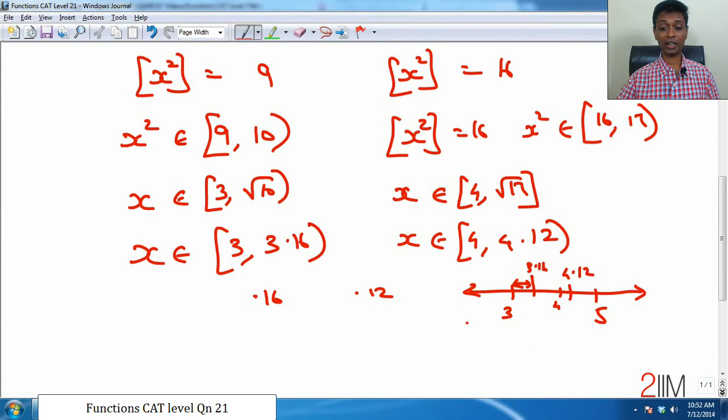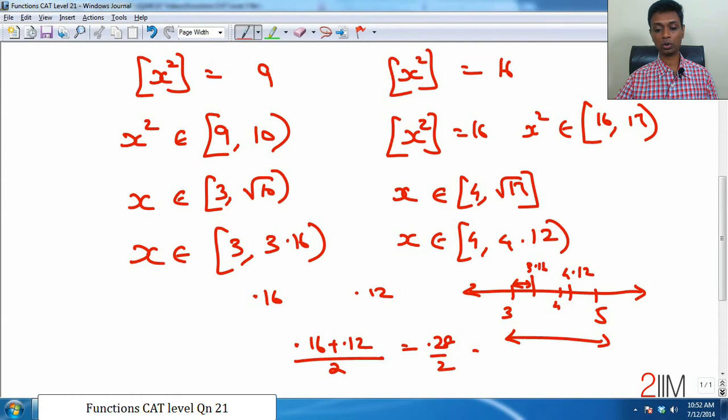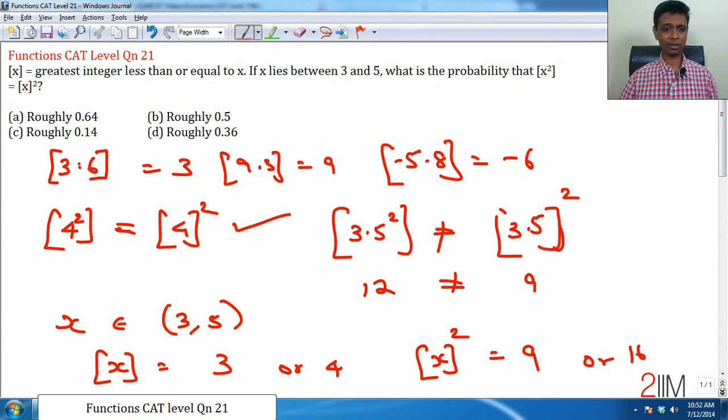So, what is the probability that x can be within this range, given that x is within this range? Very simple: 0.16 plus 0.12 by 2, which is 0.28 by 2, which is 0.14. Look, we have approximated a lot here. There could be 0.14, 1.3, 1.5, 1.6, somewhere in that range. Let us look at our answer choices. There is a 0.14, the next number is a 0.36. These are definitely very far away. The answer is 0.14, the answer choices.